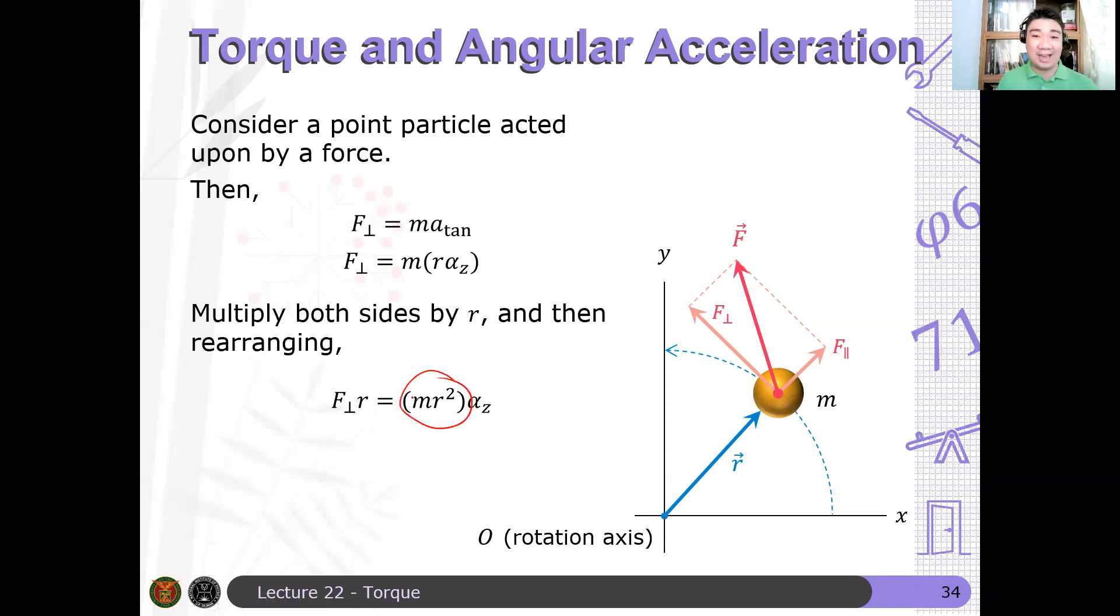Ngayon, what is m r squared? Kung naanala ninyo, anong formula ng moment of inertia? This is summation i, m_i, r_i squared. So pag isang particle lang, hindi wala ninyo yung summation. So what is this? It's the same moment of inertia for a single particle. So this is equal to the moment of inertia of a particle.